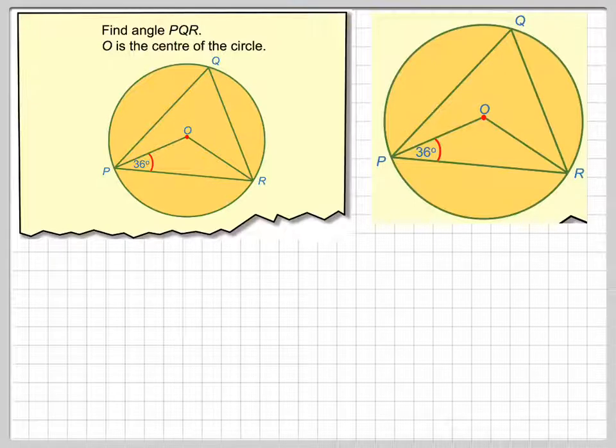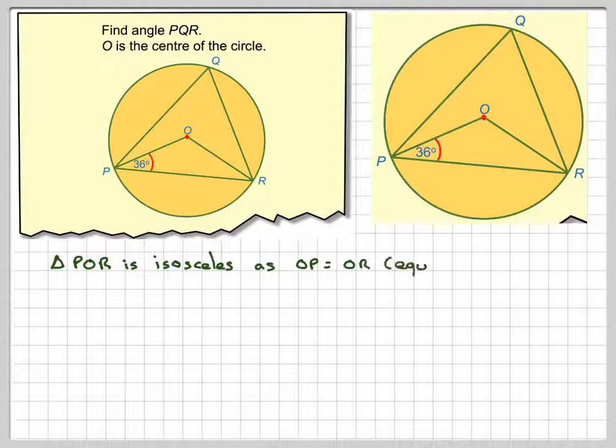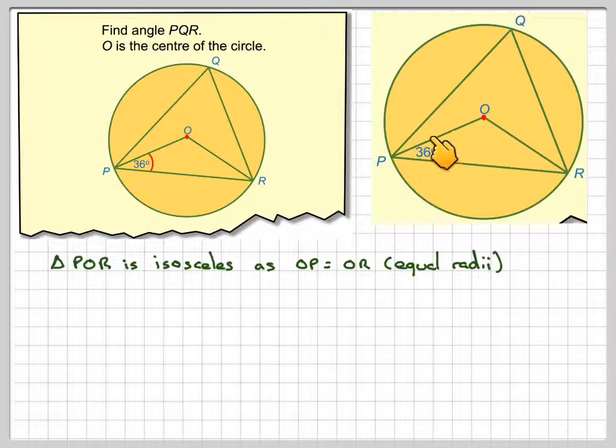So drawing the diagram out there, what we've got to realize here is that this triangle, this length here is the same as this length here because they're equal radii. Therefore we have an isosceles triangle. Angle POR is isosceles, as OP is the same as OR, equal radii.